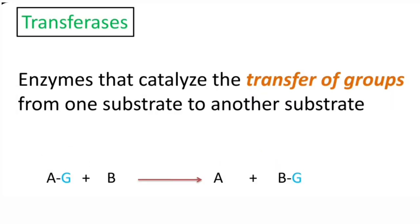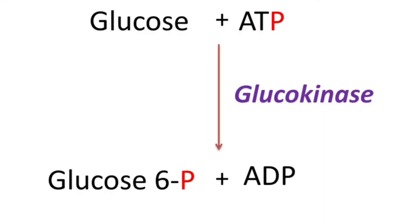Coming to the second class — transferases. The name itself indicates these enzymes are involved in transfer reactions. Enzymes that catalyze transfer of groups from one substrate to another are called transferases. In the general reaction, substrate AG reacts with substrate B, and the group G is transferred from AG to B, forming products A and BG.